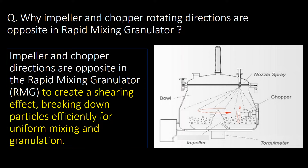Why are the impeller and chopper rotating directions opposite in RMG? The answer is that the impeller and chopper directions are opposite in RMG to create a shearing effect, breaking down particles efficiently for uniform mixing and granulation.